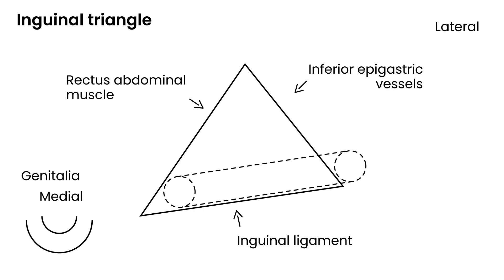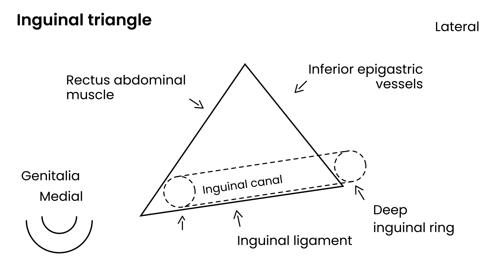I'll draw two circles, one on each side, and running through them is the inguinal canal. The first circle represents the entrance to the inguinal canal and is called the deep inguinal ring. The other circle is known as the superficial inguinal ring.